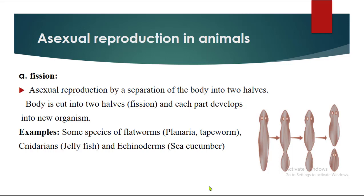Asexual reproduction in animals. The first type of asexual reproduction in animals according to your SLO is fission. In fission we will be discussing binary fission. It is a type of asexual reproduction in which the body of the organism actually divides — particularly in binary fission it divides into two halves. Both the halves grow into new individuals separately.